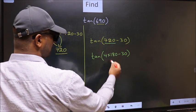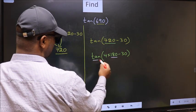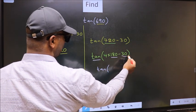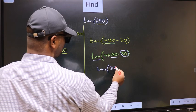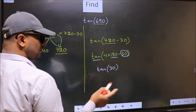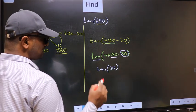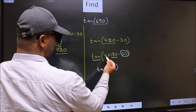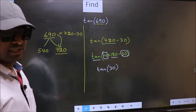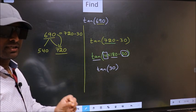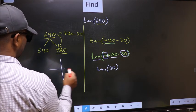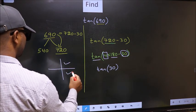Here we have 180, so tan is not going to change — it will remain tan. And inside, we get the angle 30. Now the question is: will we get here plus or minus? To answer that, we look at the number before 180, which is 4. And 4 is even. All the even multiples of 180 lie either in the 1st or in the 4th quadrant.